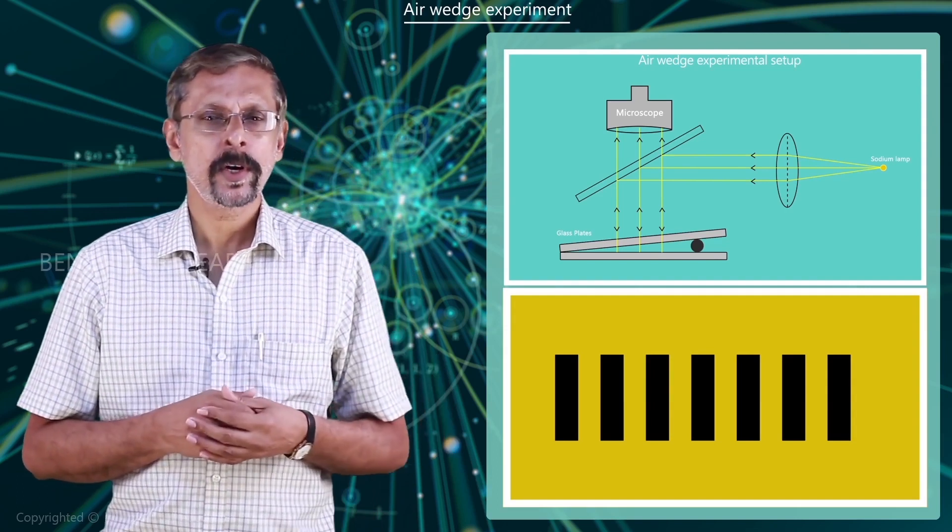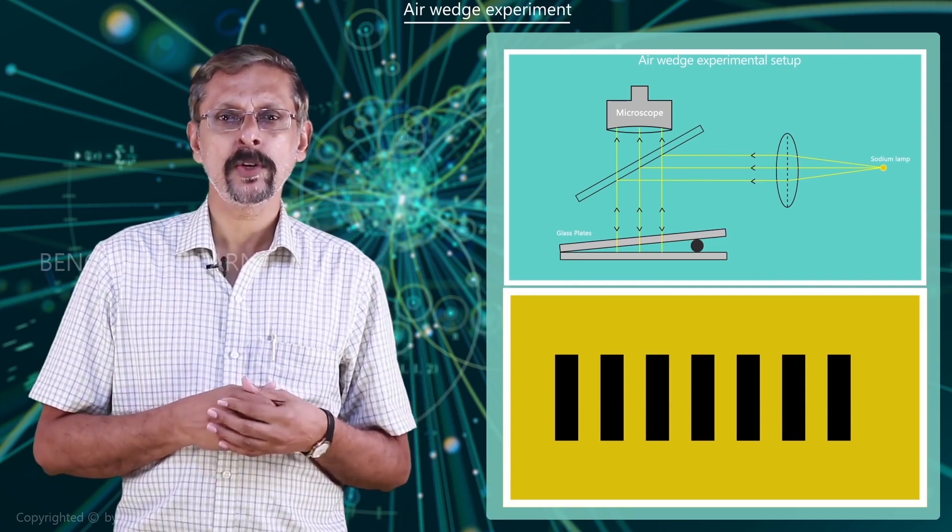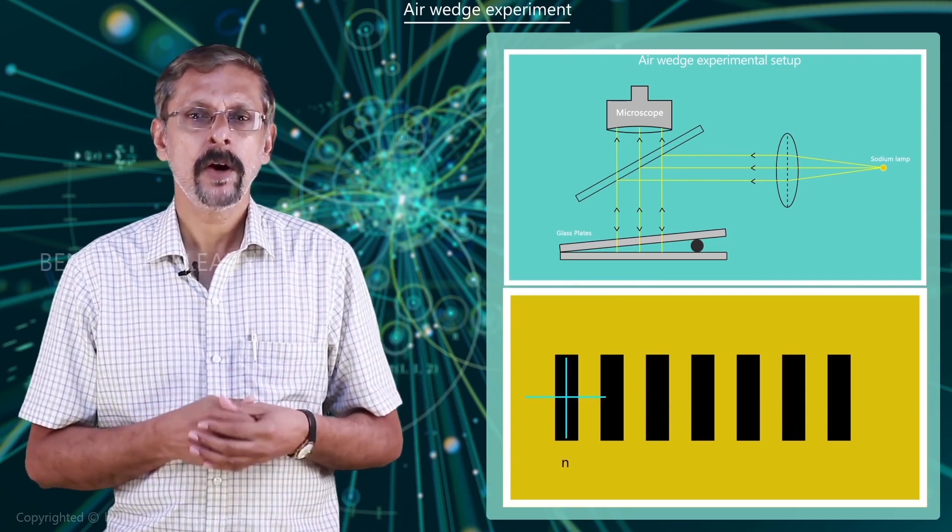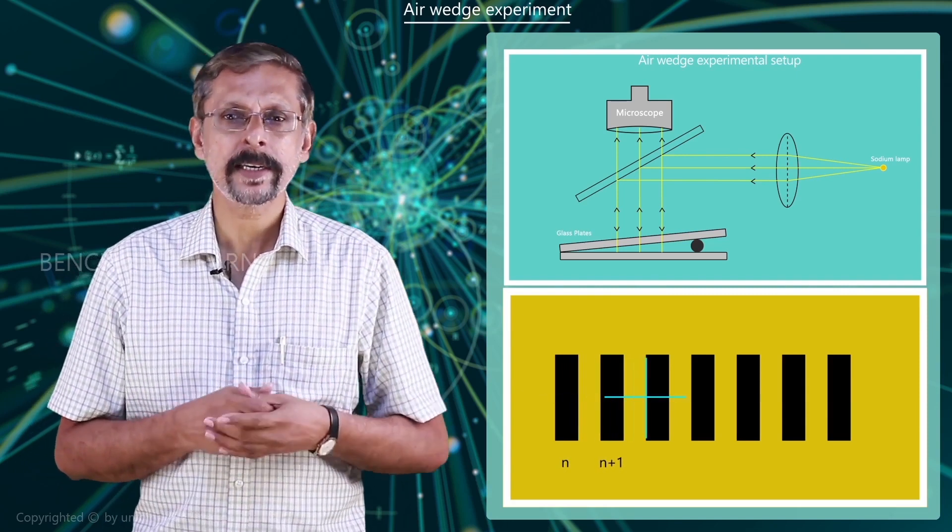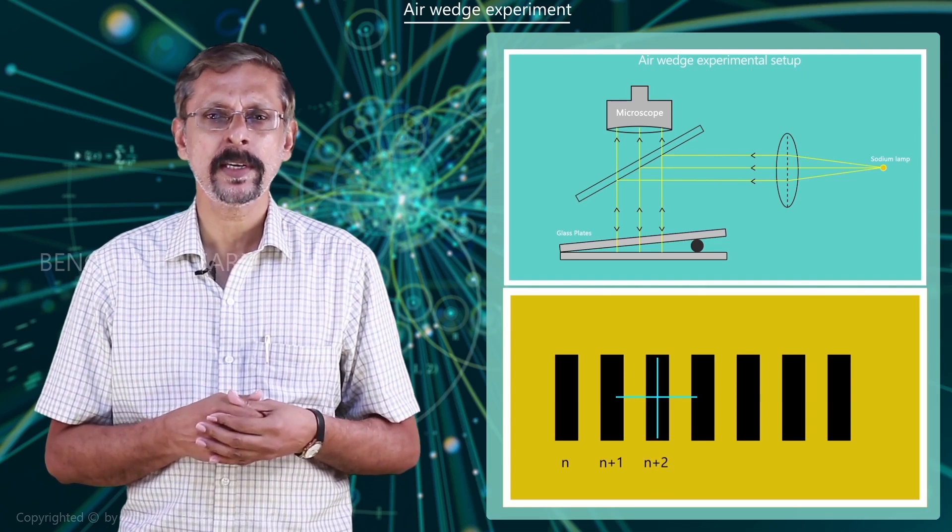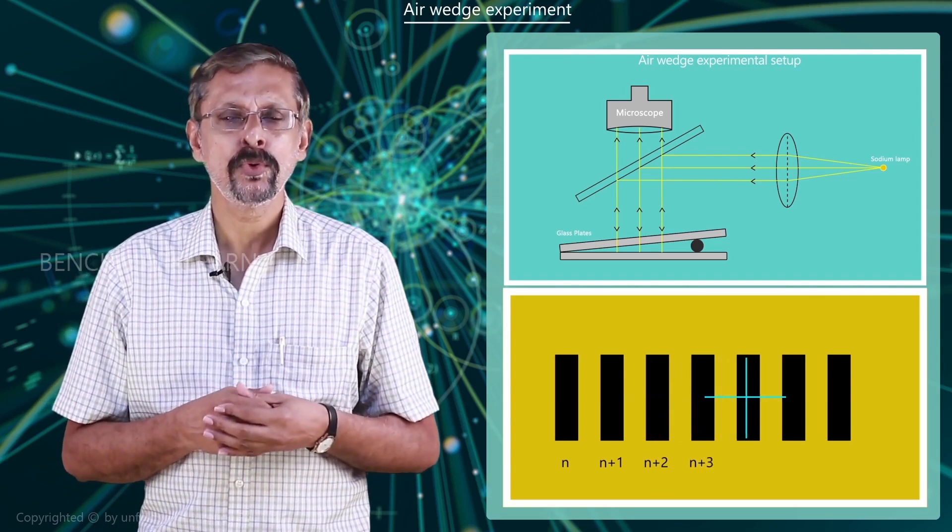Keeping the vector cross wire on one of the dark bands, the reading corresponding to the nth dark band is taken. Now the cross wire of the microscope is kept on alternate dark bands and the corresponding readings are taken. This is continued up to n plus 20.